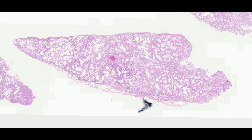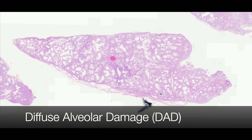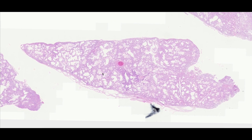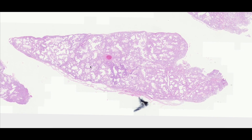In this case we have a case of diffuse alveolar damage or DAD. At low power, notice that this is a diffuse process and the entire lung is markedly abnormal. However, an important point is that these cases can also be patchy — they don't necessarily need to diffusely involve an entire specimen. The term 'diffuse' in diffuse alveolar damage actually relates to the fact that within an alveolar lobular unit the damage diffusely involves all components, but not necessarily the whole specimen. So you can actually have a patchy diffuse alveolar damage process.